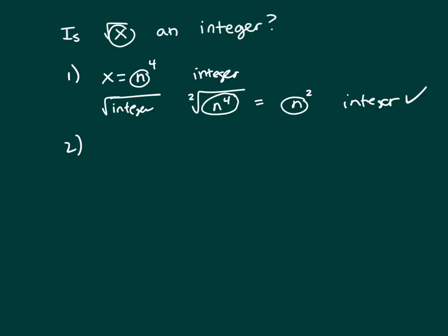Clue 2, x equals 16. So if x equals 16, plug that in here, what is the square root of 16? It's 4, and 4 is an integer. So that one works also, so it's d.